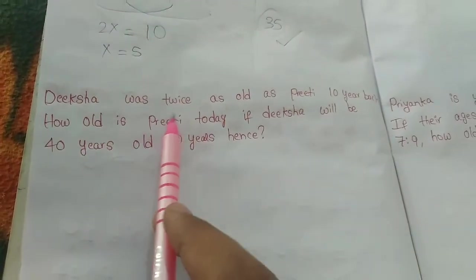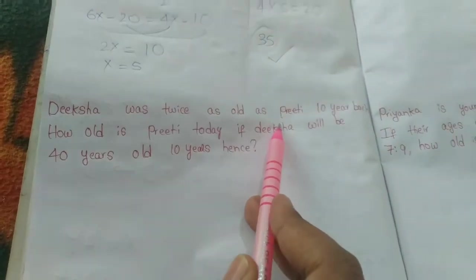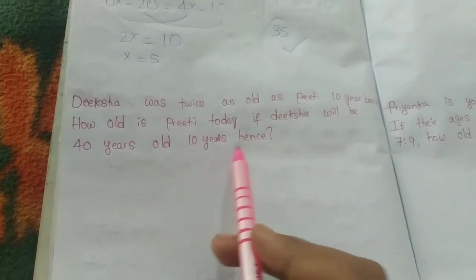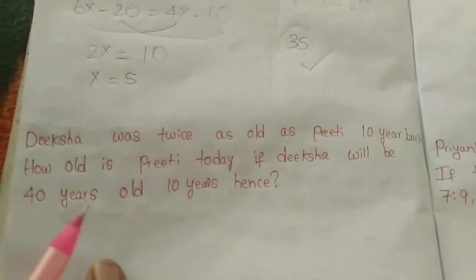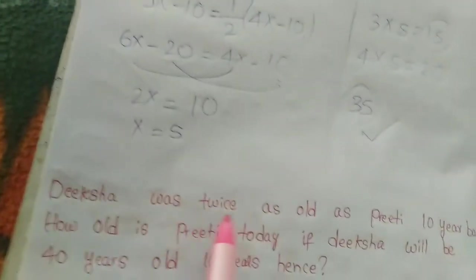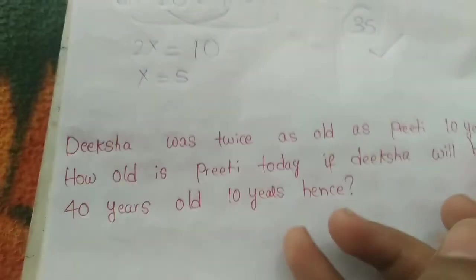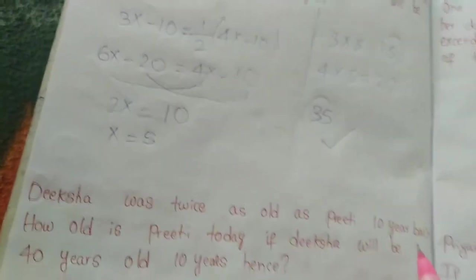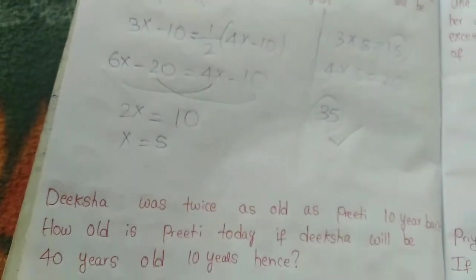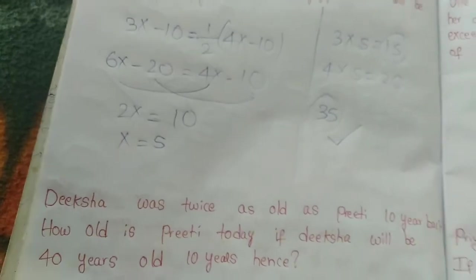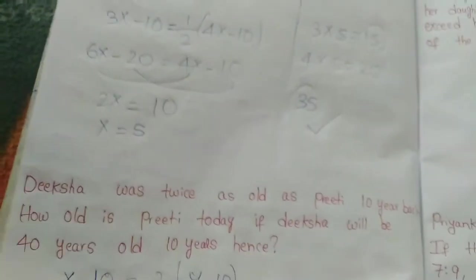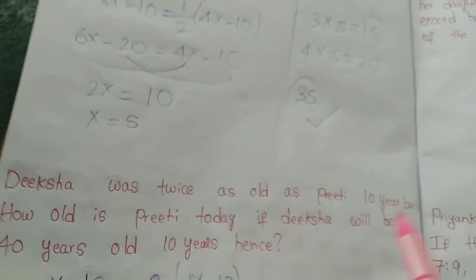Coming to the next question: Deeksha was twice as old as Preeti 10 years back. How old is Preeti today if Deeksha will be 40 years old 10 years hence? Let Deeksha be x and Preeti be y. Ten years back: x minus 10 equals 2 times (y minus 10).